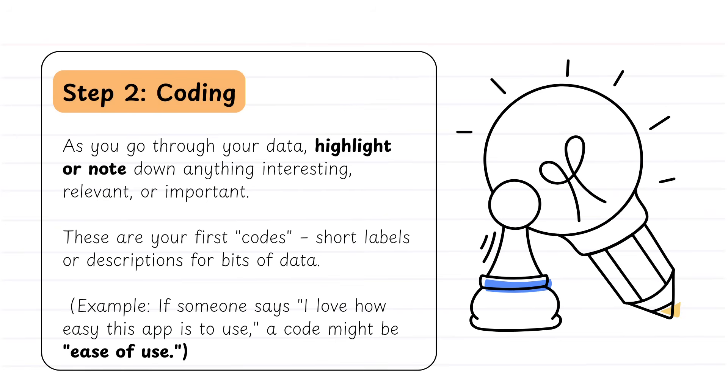Step two is where we start to code our data. Think of this as a little bit like building blocks for a house, where you're trying to break down your data into the individual sum of its parts. And here we need to go through our data and highlight or note down anything that you find particularly interesting, relevant, or important in relation to your research question.